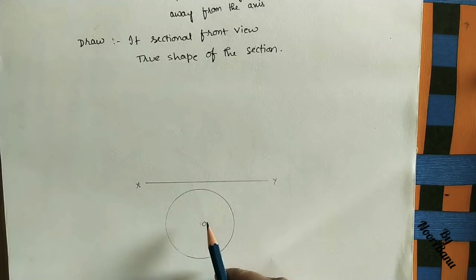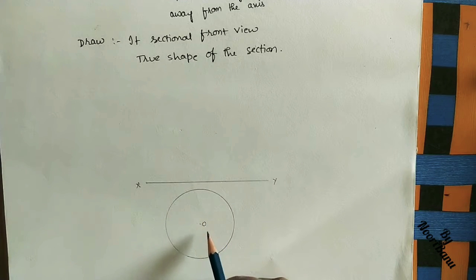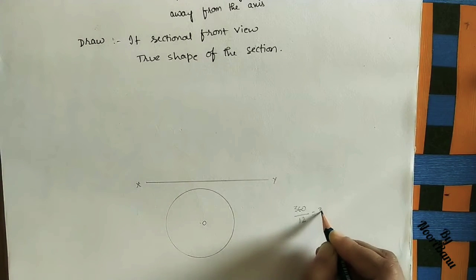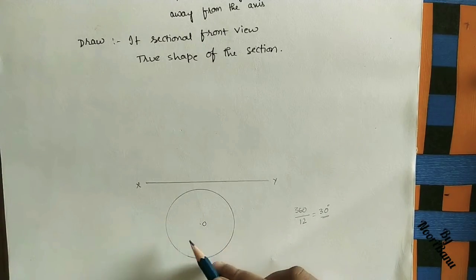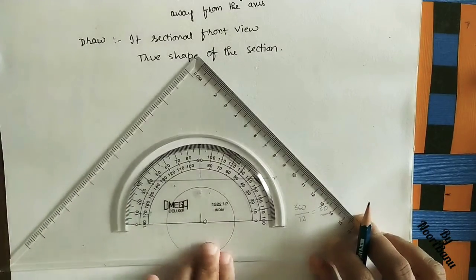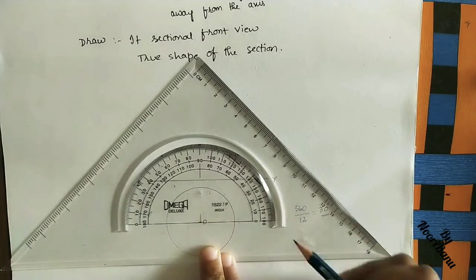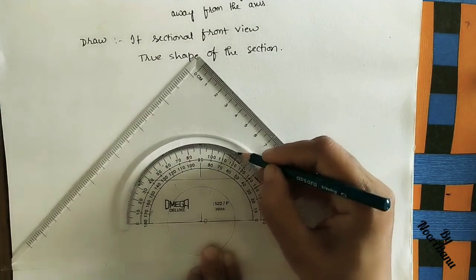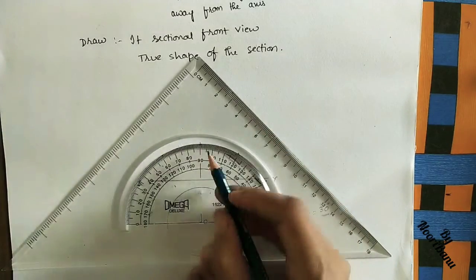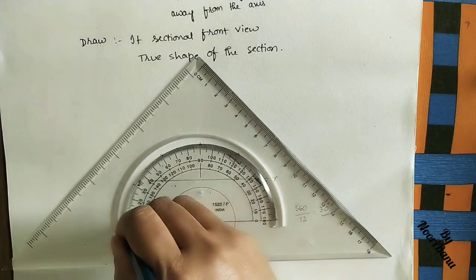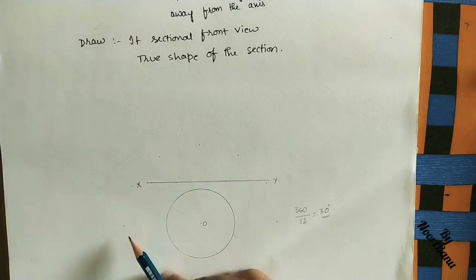Divide this circle into 12 equal divisions. The angle at the center of any circle is 360 degrees; divided into 12 equal parts gives 30 degrees each. Mark 30-degree equal divisions starting from the reference diameter: 0, 30, 60, 90, 120, 150, 180 degrees and so on. Join all these points to the center.